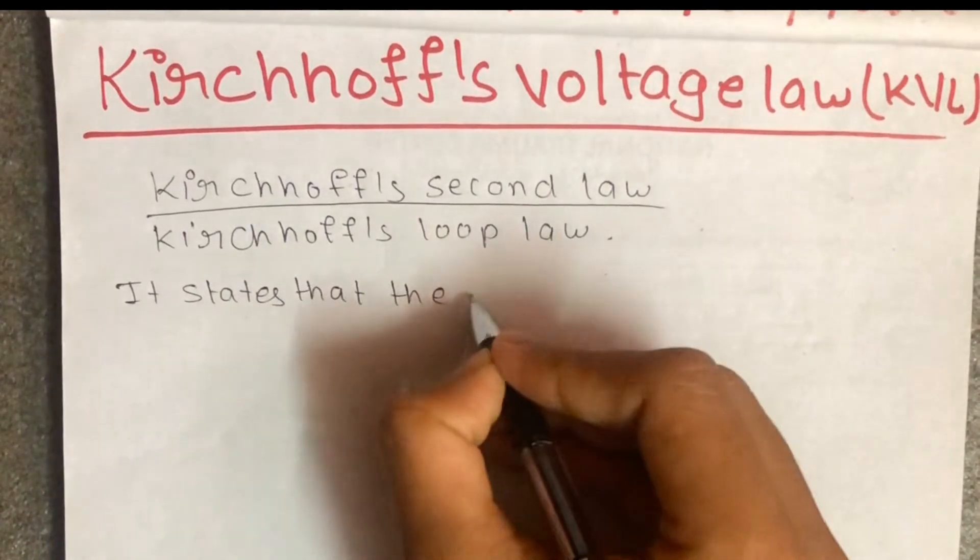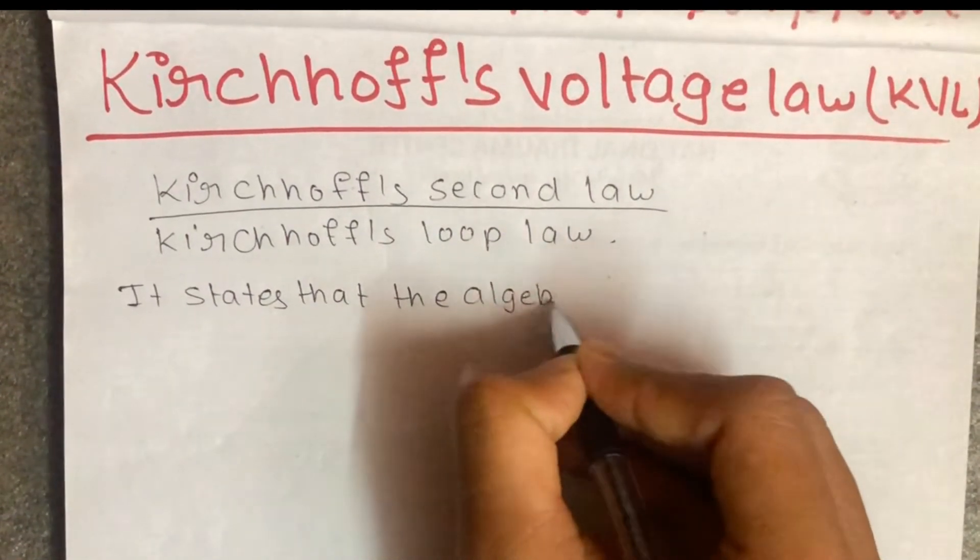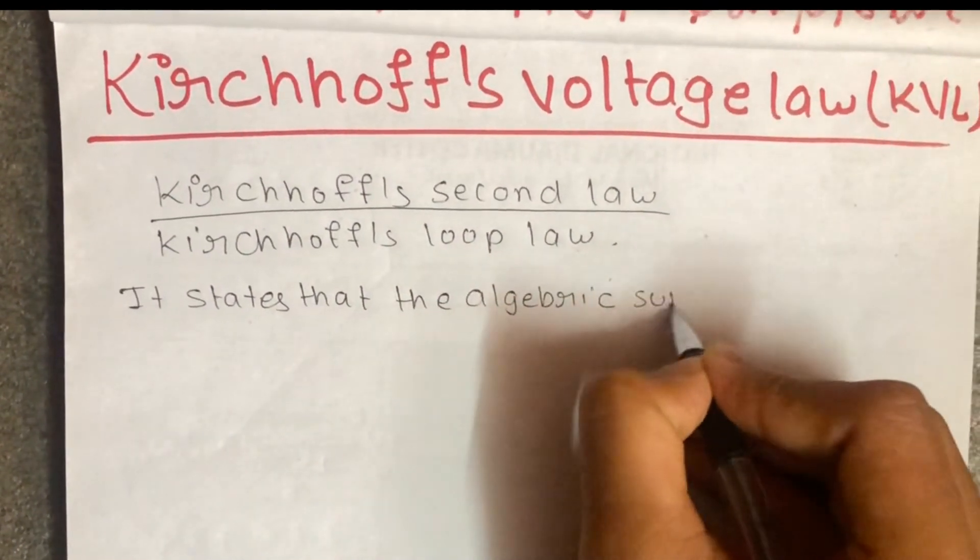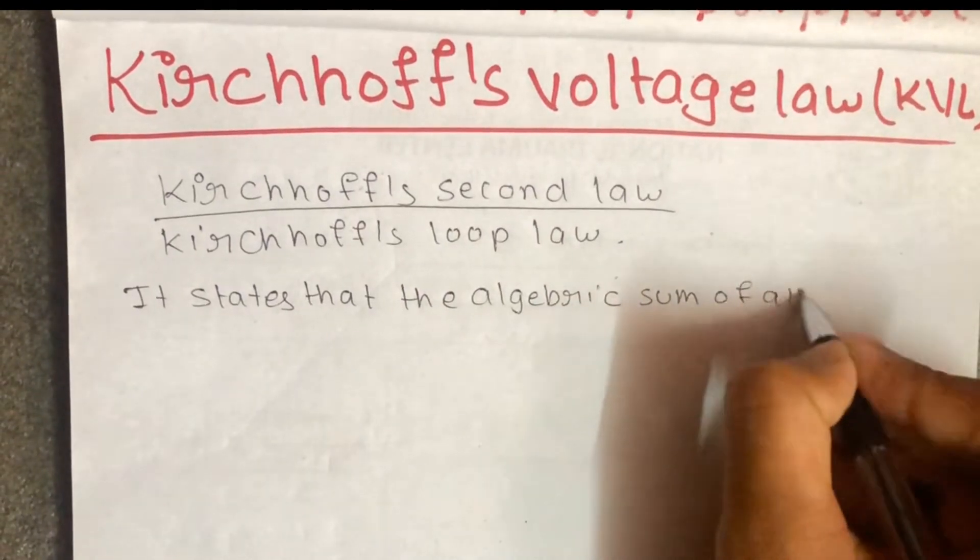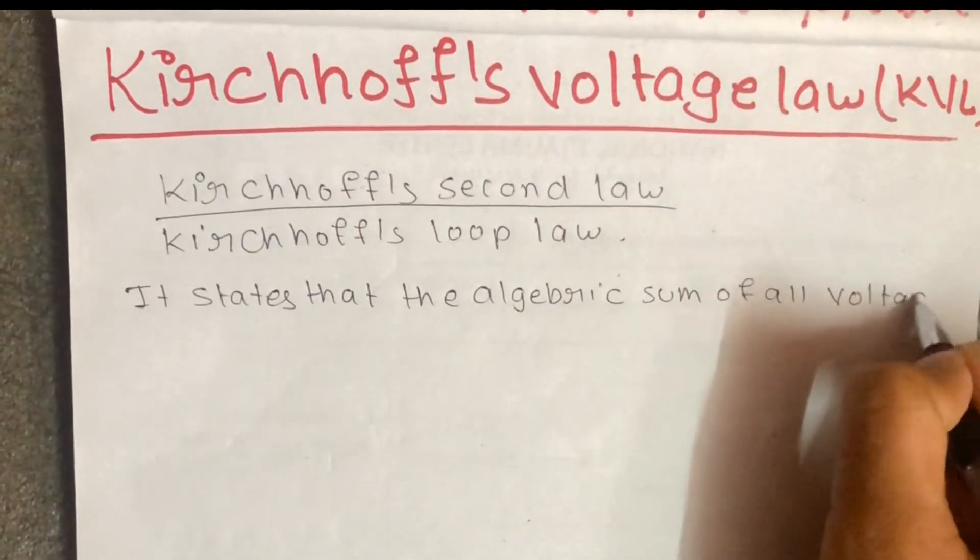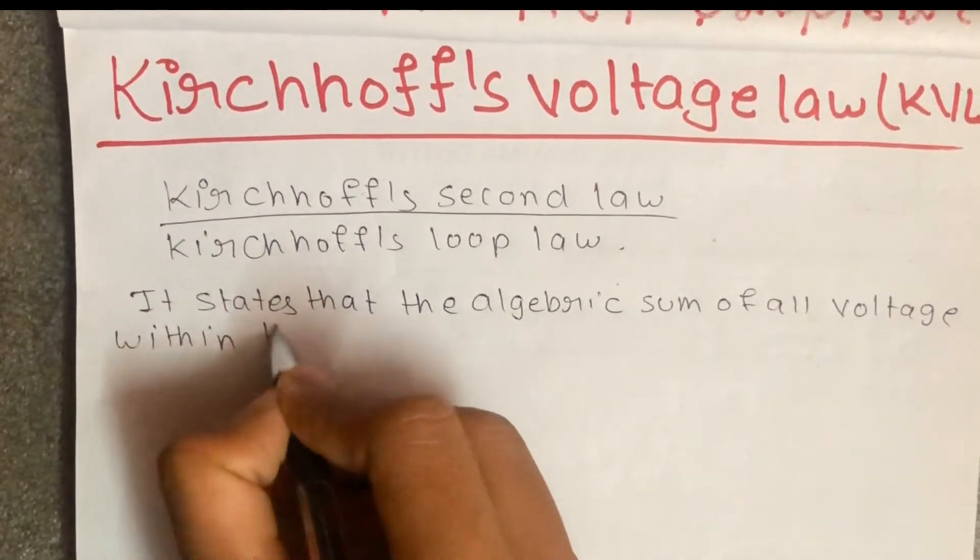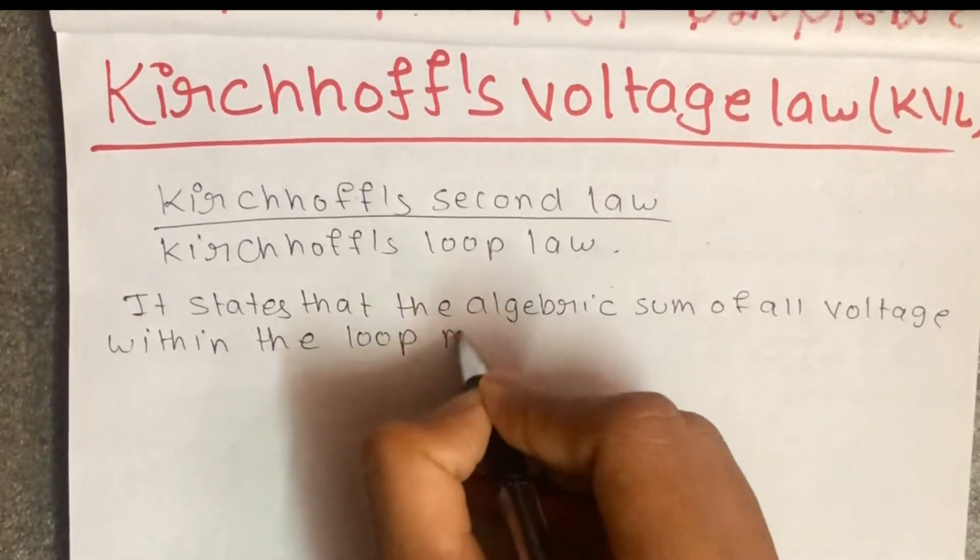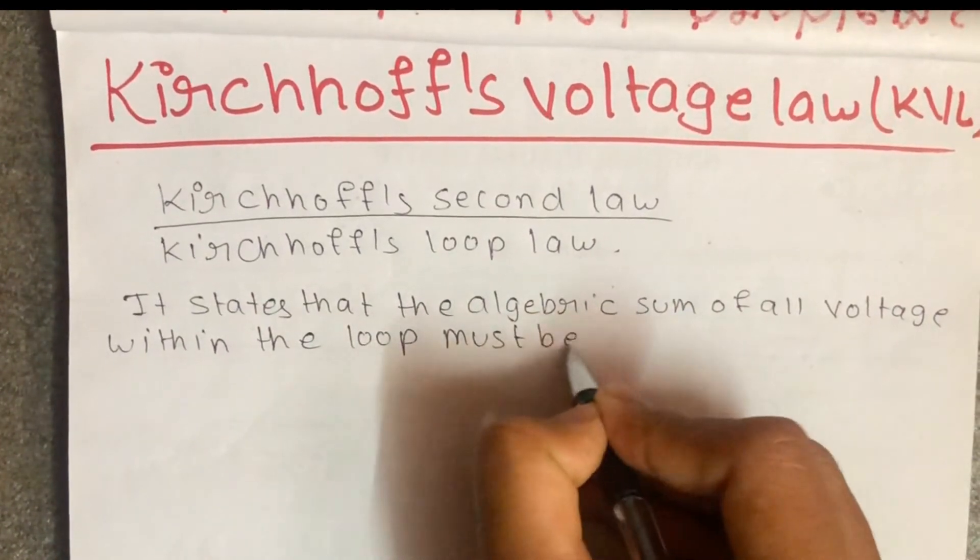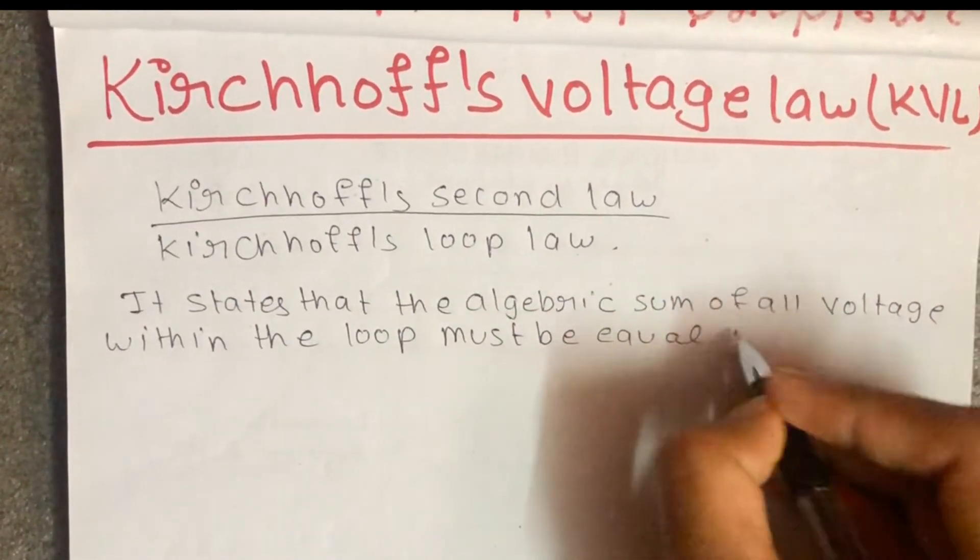The algebraic sum of all voltage within the loop must be equal to zero.